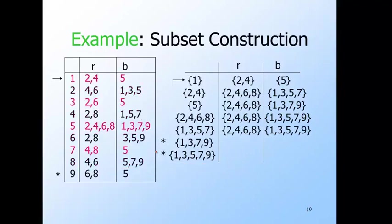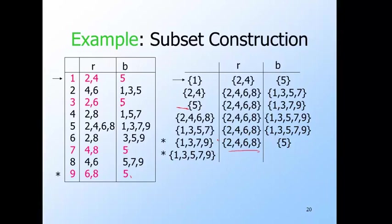For the row for {one, three, five, seven}, the same process applies. On R you get {two, four, six, eight}. On B you get {one, three, five, seven, nine}. Both are states we've seen, so we add no new rows. For {one, three, seven, nine}, the interesting thing is that on B, all of one, three, seven, and nine only go to five on a black move. So after those states on B, you get the set containing only five — a state we've seen before, as is {two, four, six, eight} on R. So we don't need to add any new states. And finally, {one, three, five, seven, nine} also yields no new states.